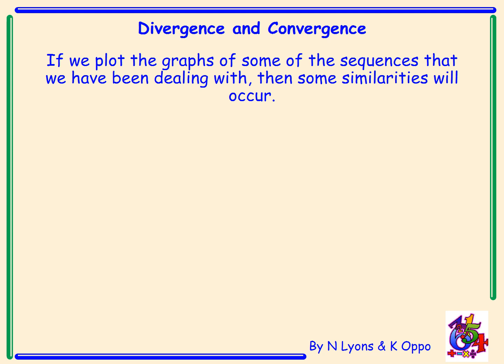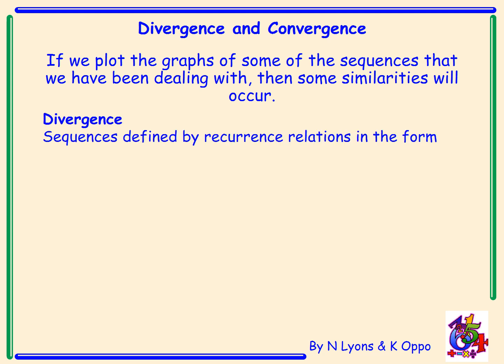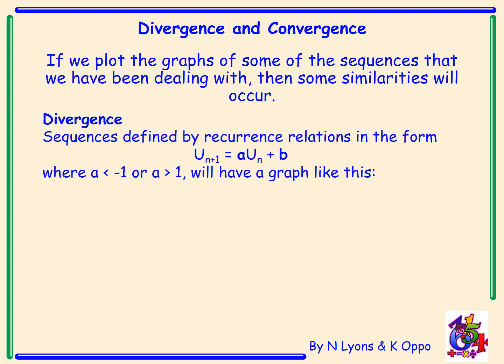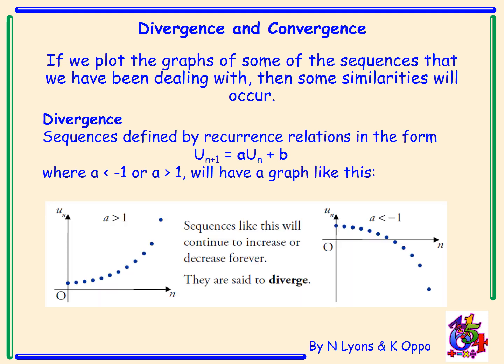If we plot the graphs of some of the sequences that I've been dealing with, then some similarities will occur. Divergence: sequences defined by recurrence relations in the form u_(n+1) = a·u_n + b, where a is less than minus 1 or a is greater than 1, will have a graph like this. These sequences will continue to increase or decrease forever and they are said to diverge.